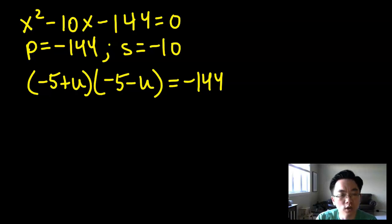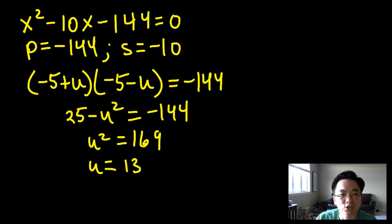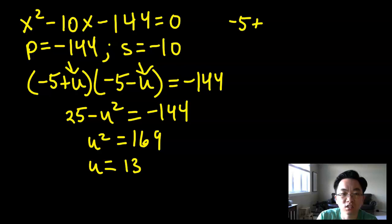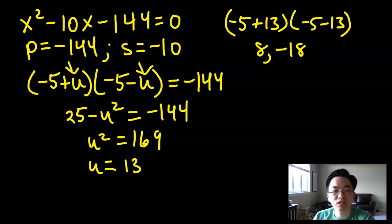Lots of students like this. So you expand the left-hand side and get a difference of squares: 25 minus u squared equals negative 144. When you isolate u squared, you get u squared equals 169, and u equals 13. We'll go with the principal root, u equals 13. Substituting back in, we get negative 5 plus 13 and negative 5 minus 13, which gives us 8 and negative 18. Check: 8 times negative 18 is negative 144, and 8 plus negative 18 is negative 10.